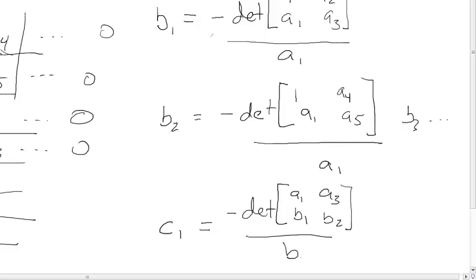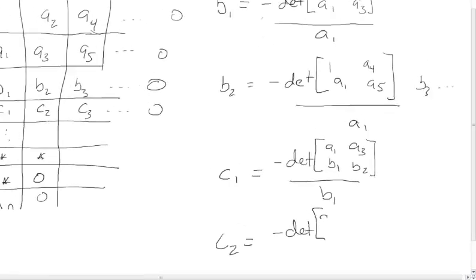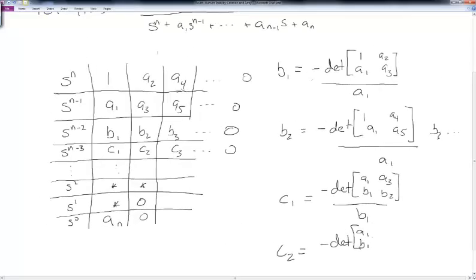For c2, we again take the negative determinant: first column entries a1 and b1, and the column after c2 which is a5 and b3, then divide by b1. We keep working our way down the array until we reach zeros and can stop calculating.